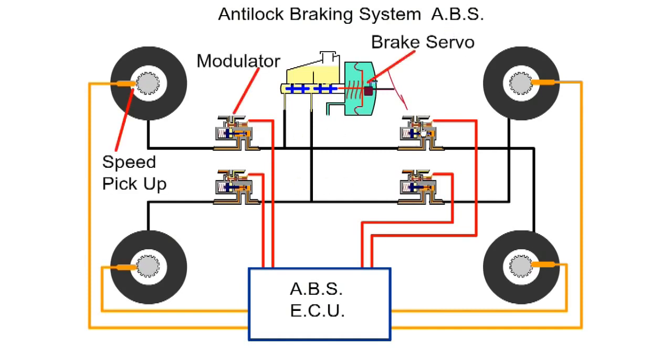Here we have a four-channel, four-sensor ABS system, where each wheel is controlled individually. Wheel speed is detected by a proximity sensor located beside a toothed wheel, which sends a signal to the ECU.